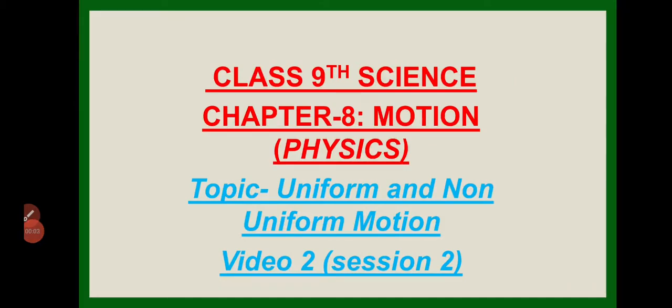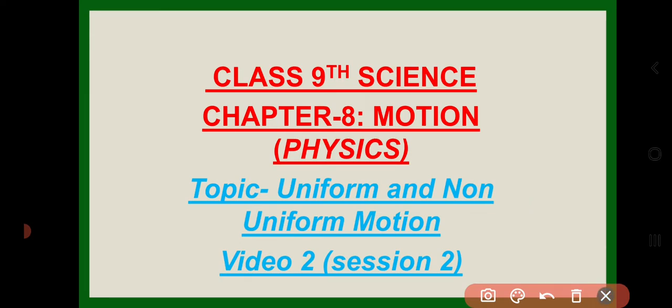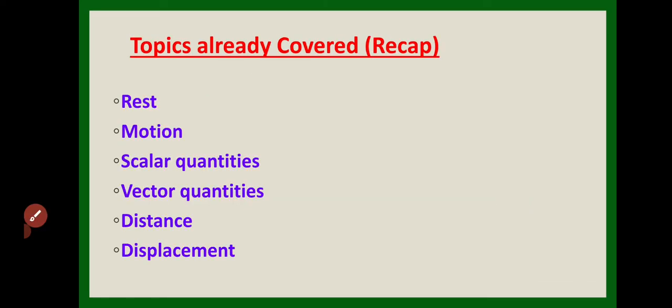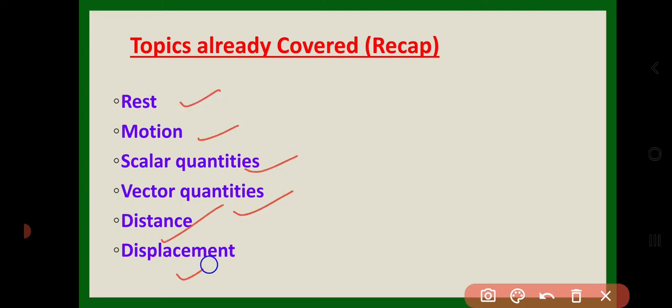Welcome back to session 2, video 2 of chapter 8 — Motion — physics of class 9th science. In this video we are going to discuss uniform and non-uniform motion. Before starting, let us recall the topics discussed in our previous class: rest, motion, scalar quantities, vector quantities, distance and displacement.